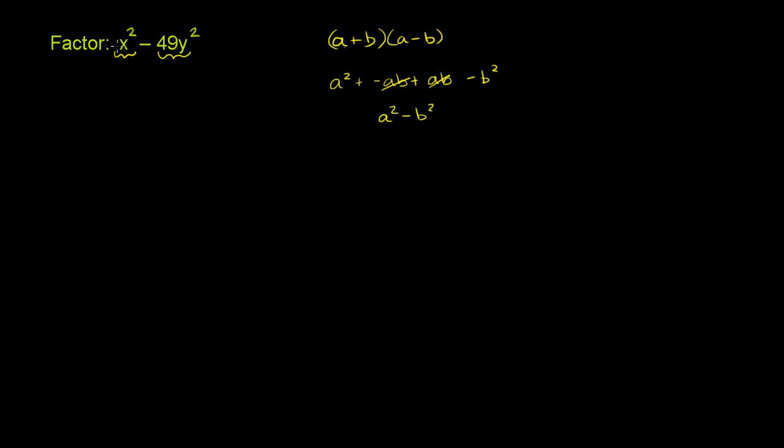And that's the exact pattern we have here. We have an a squared minus a b squared. So in this case, a is equal to x, and b is equal to 7y. So we have x squared minus 7y, the whole thing squared.